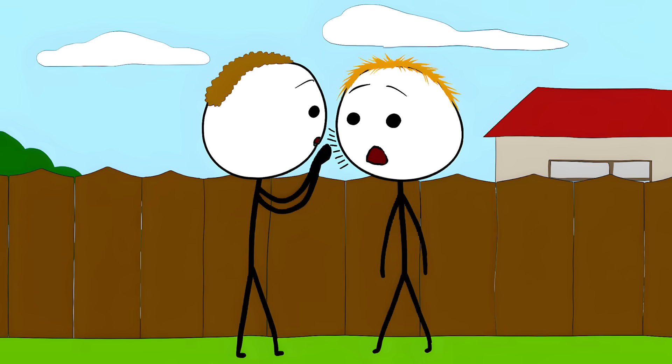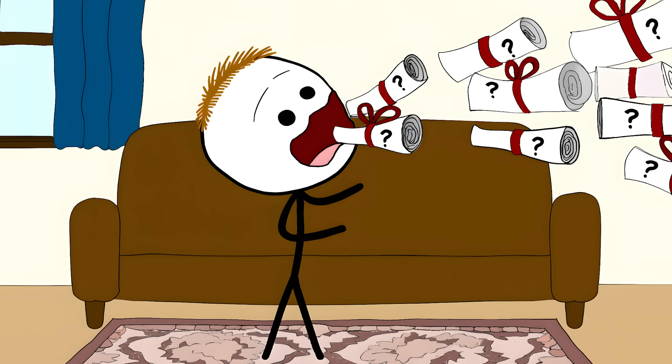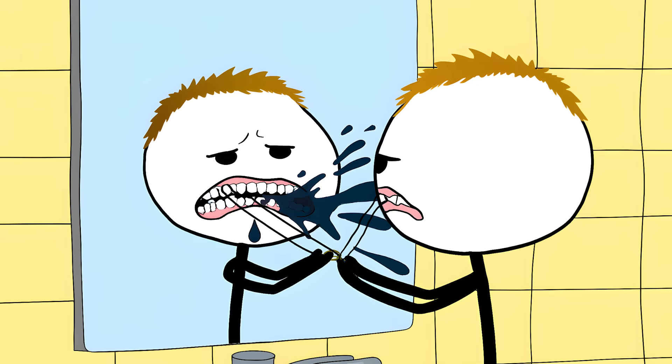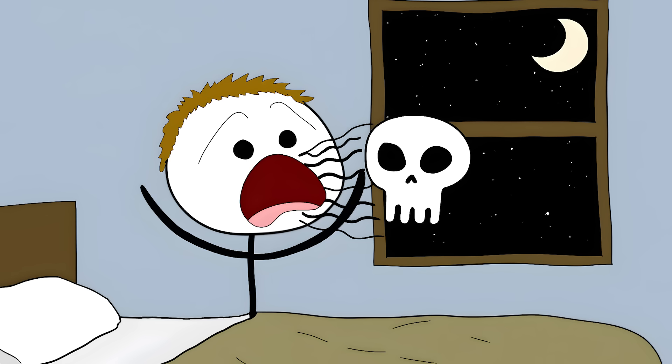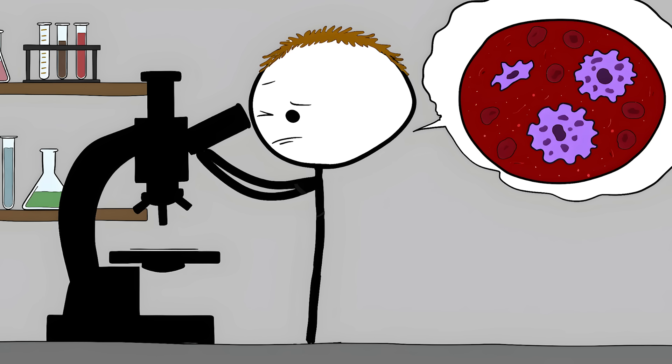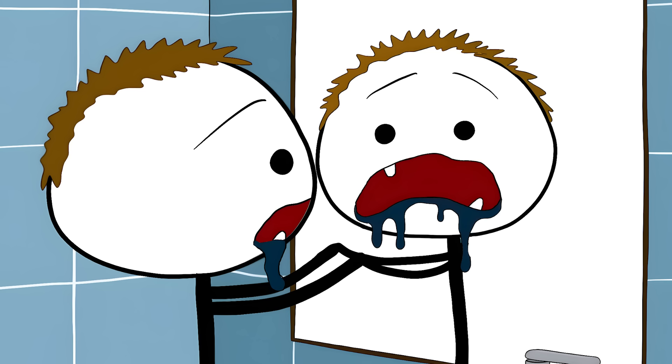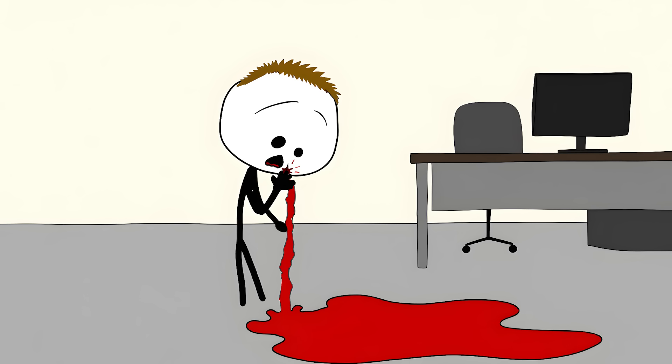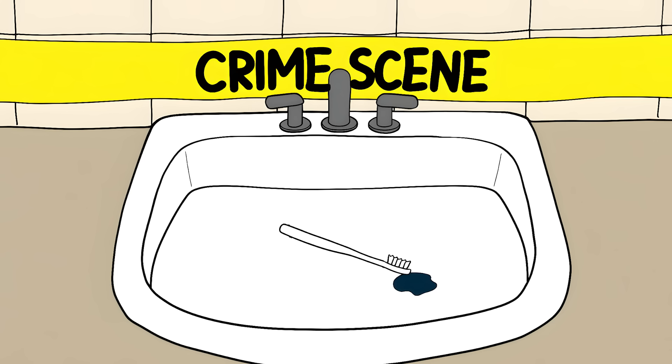Your mouth is like the gossipy neighbor of your body. It loves to spill secrets about what's going on inside. And sometimes those bleeding gums aren't just complaining about your lazy flossing habits. They might be screaming about something way more serious. Leukemia, that blood cancer. One of its first signs is gums that bleed way too easily. Because when you have leukemia, your blood can't clot properly. So that little bump from your toothbrush turns into a mini crime scene in your bathroom sink.